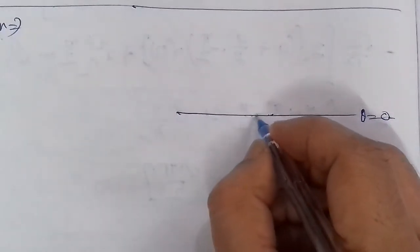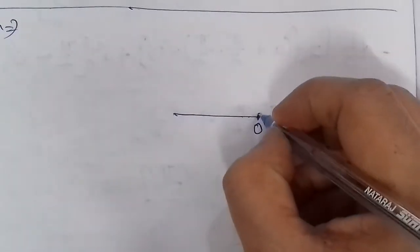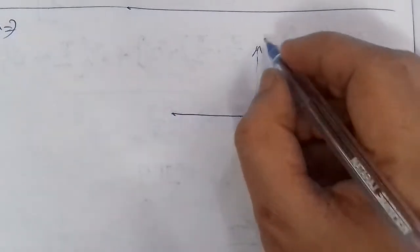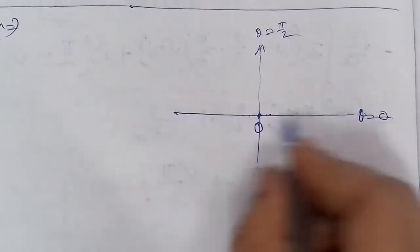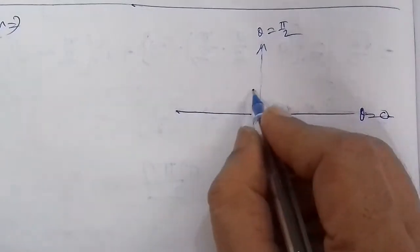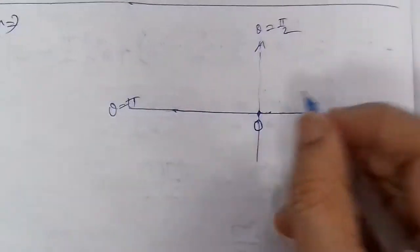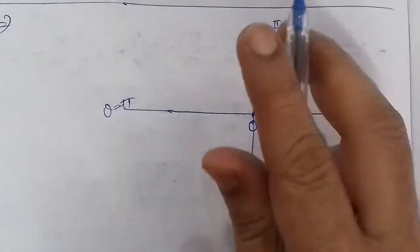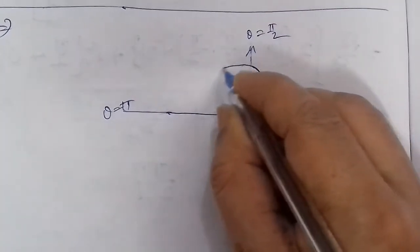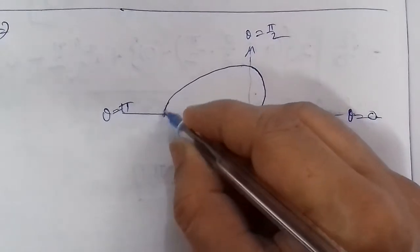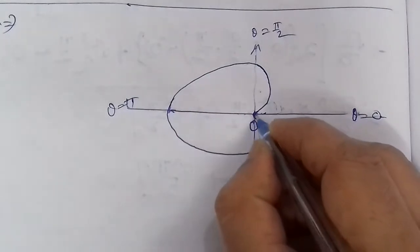We should memorize this. We've drawn the initial line, meaning θ = 0, and let's assume this point is the pole. The cardioid and this line which passes through, θ = π/2, because the angle from here is 90 degrees, meaning π/2. And here θ = π. This cardioid where a(1 - cos θ), you know it forms this way. We should memorize this figure.